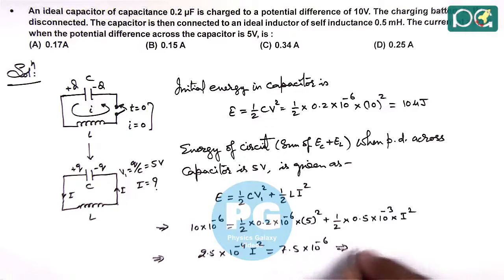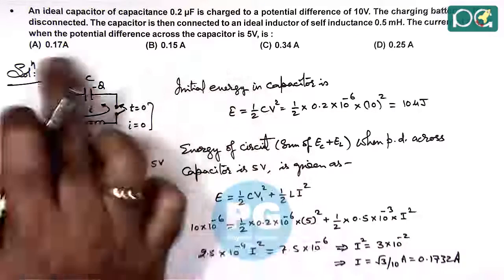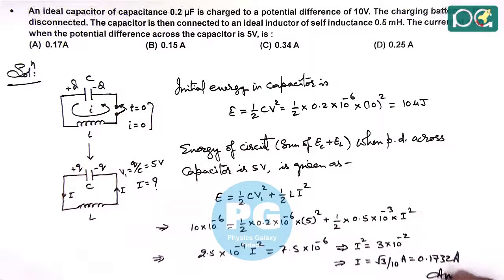Simplifying this, the value of I squared equals 3 times 10 to the power minus 2, giving us I as root 3 by 10 ampere, which is 0.1732 ampere. Checking with the given options, it matches with option A. The answer to this question is option A.